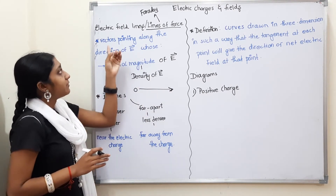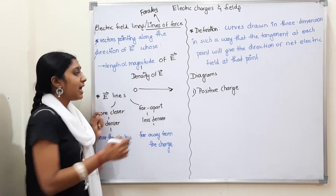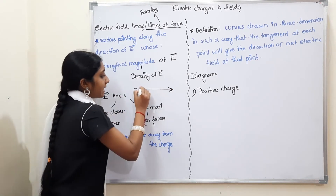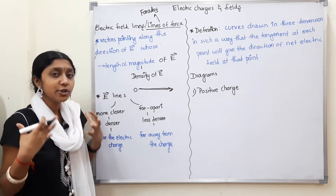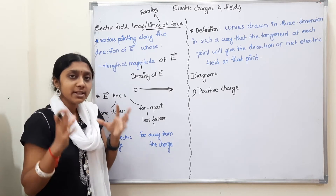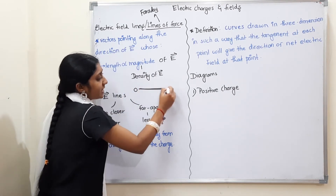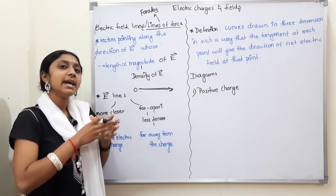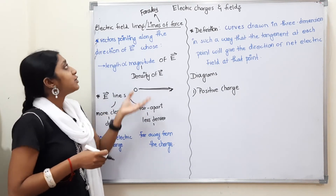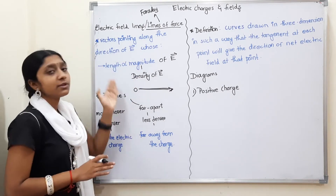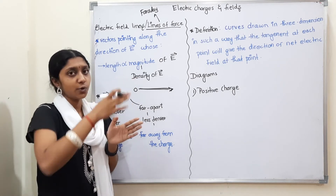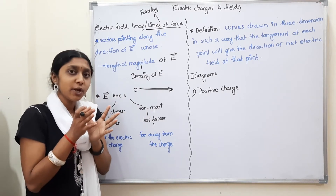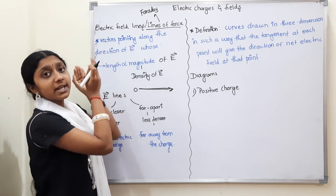The vector points along the direction of the electric field. Where is the magnitude? It is directly proportional to its length. So the length of the electric field line tells you the magnitude — a longer line means a stronger electric field. Where the magnitude is very large, the field is very dense and strong.